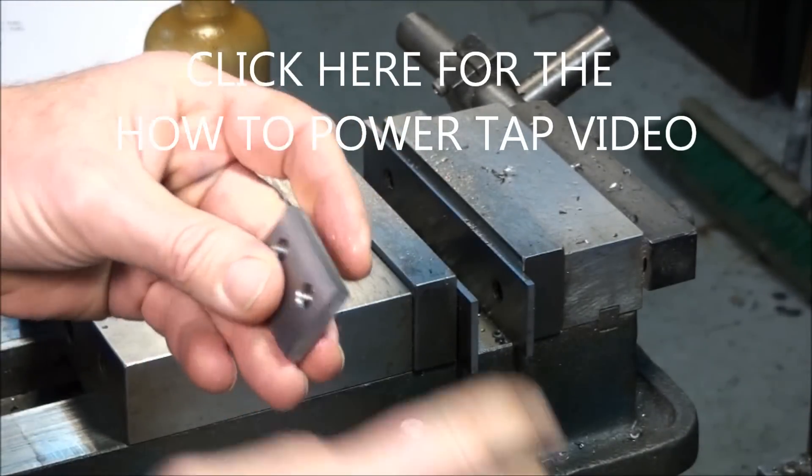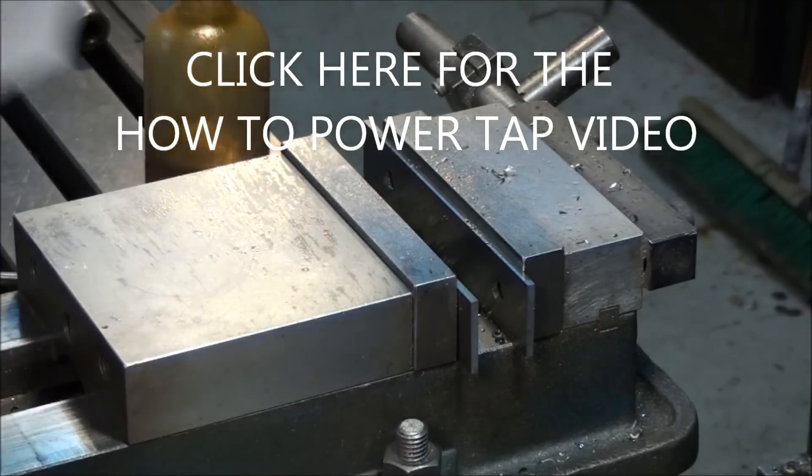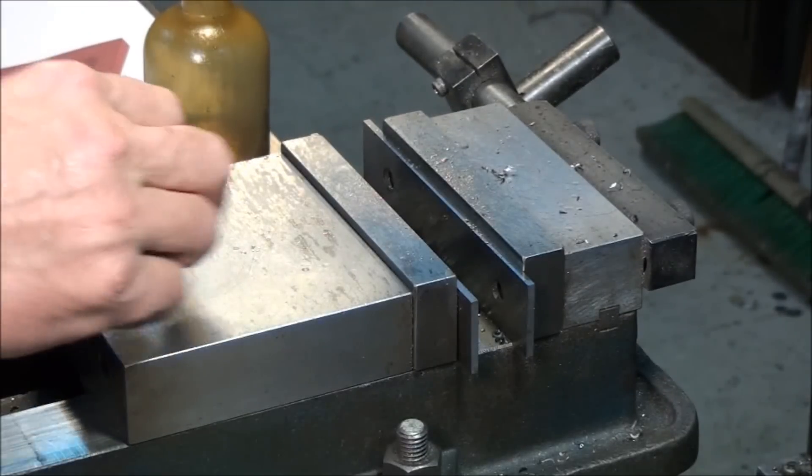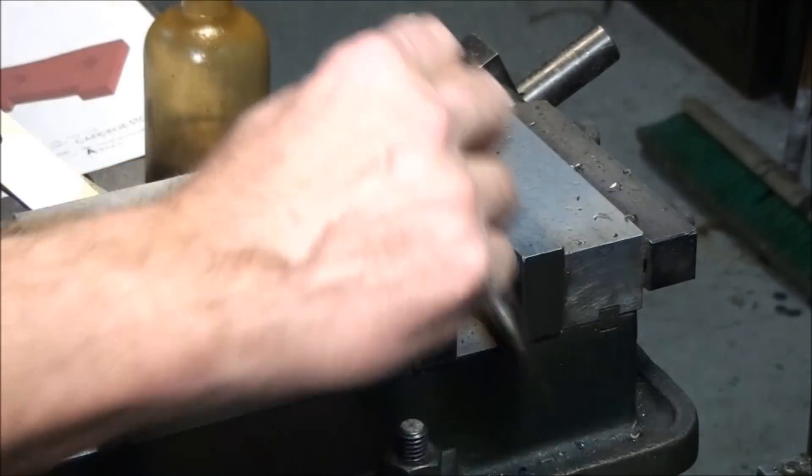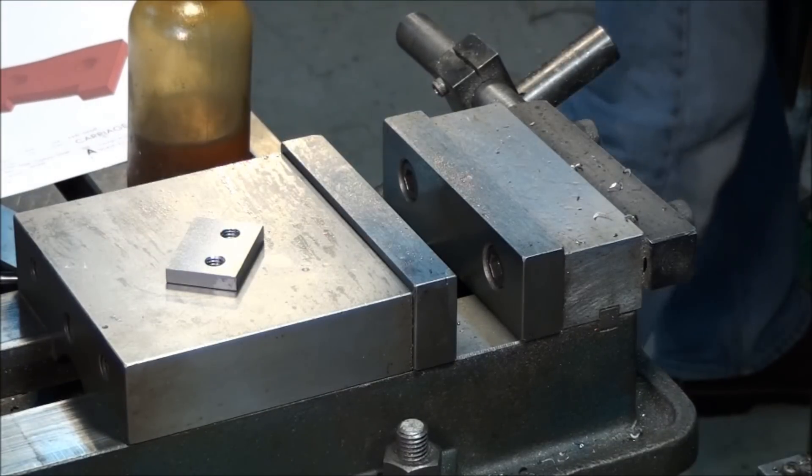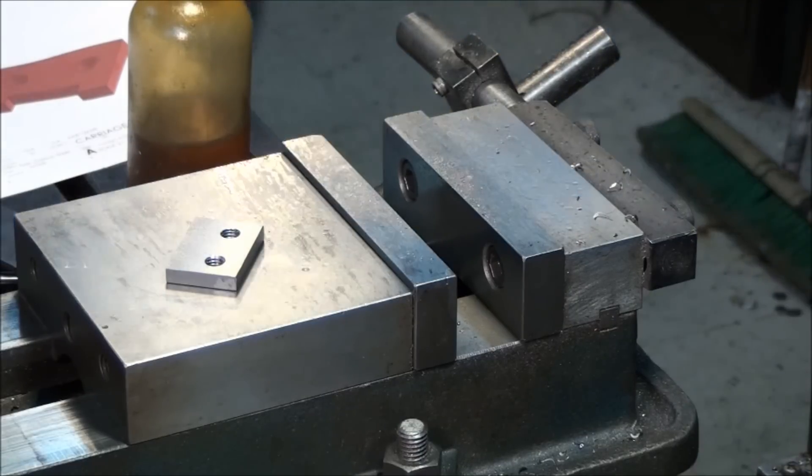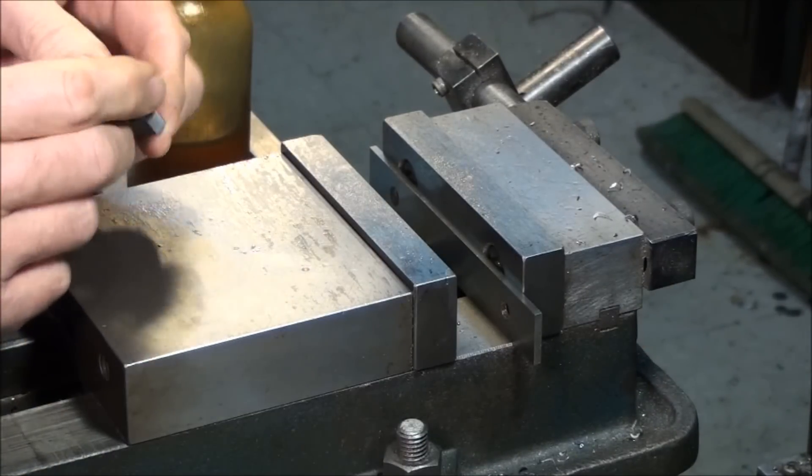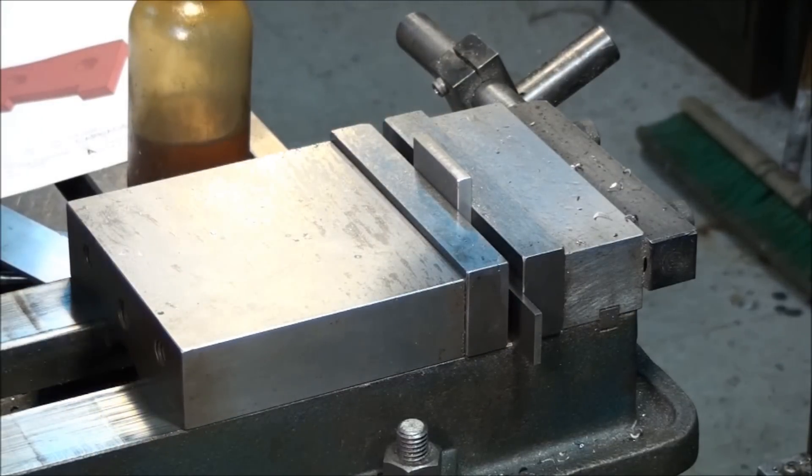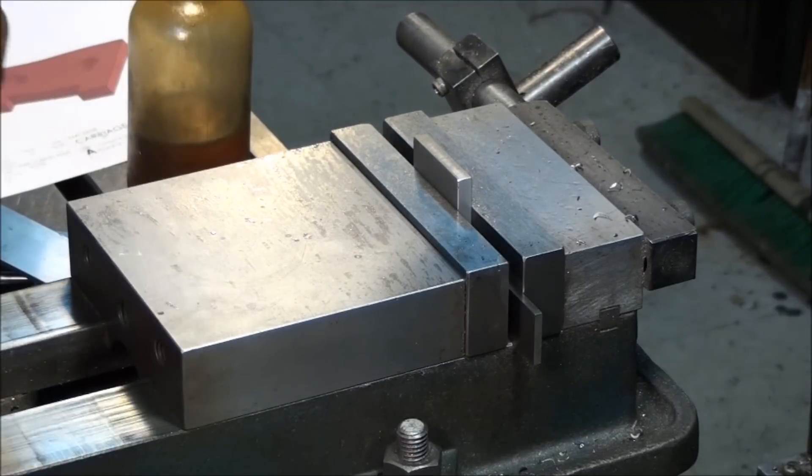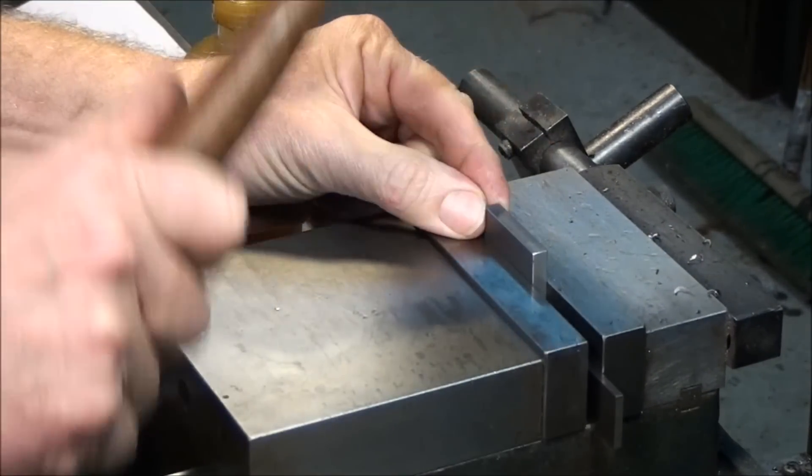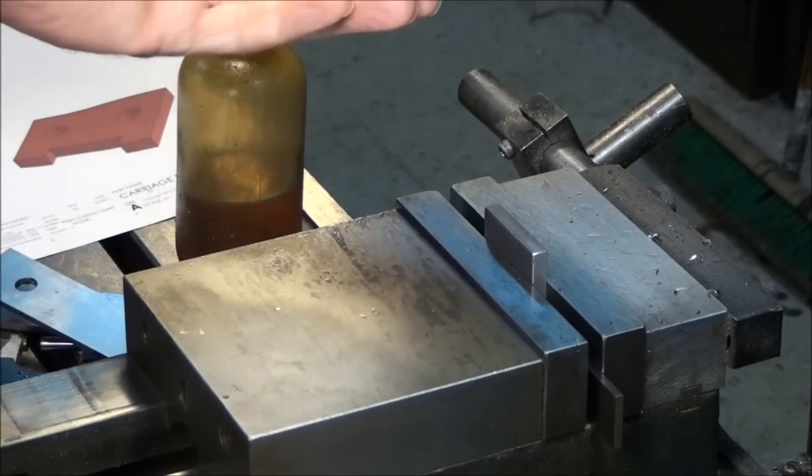So let's just knock the burrs off these tapped holes, and all that's left is to cut this 0.200 deep by 0.875 wide slot. So let's go ahead and set up and do that. Let me grab another parallel. All right, so notice I'm hammering on a finished edge now, so I switched to a plastic hammer. So let's just hammer it down and we'll throw the edge finder in.